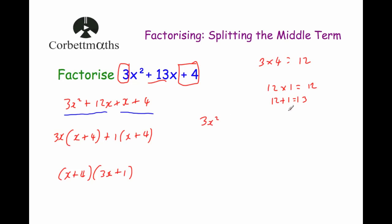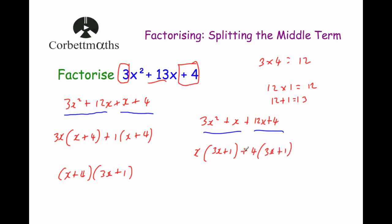Just showing the other way it works: if we write 3x squared plus x plus 12x plus 4, the common factors of 3x squared and x give us x(3x + 1). For the second half, 12x and 4 have a common factor of 4, giving 4(3x + 1). We take out (3x + 1) and are left with (3x + 1)(x + 4) — the same answer, just written the other way around. This confirms that for splitting the middle term, the order doesn't matter.